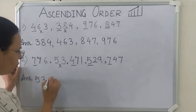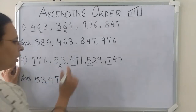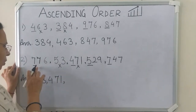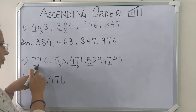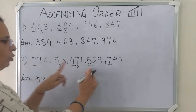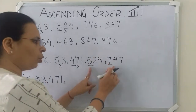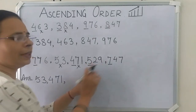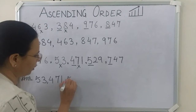So we will write 471. Now we have written 471, so we will cut it. Now again we will compare. The first hundreds digit is 7. Is 7 smaller than 5? No. So we will skip 7 and take 5. Is 5 smaller than 7? Yes. So our next number is 529.